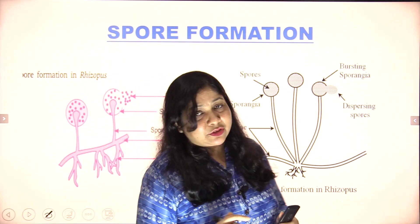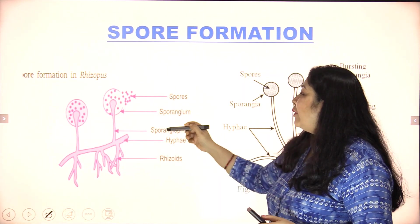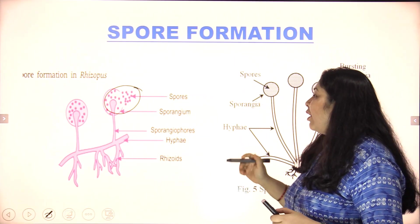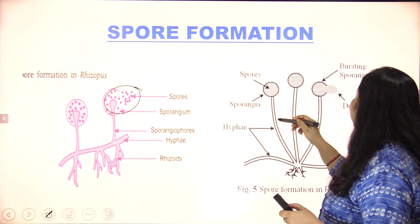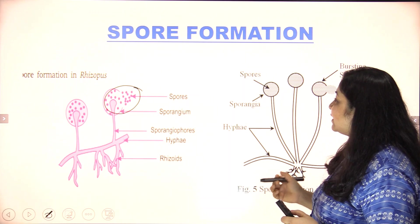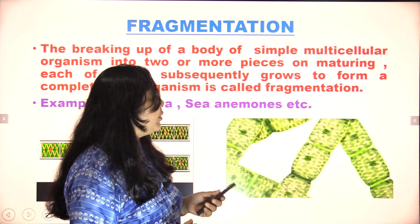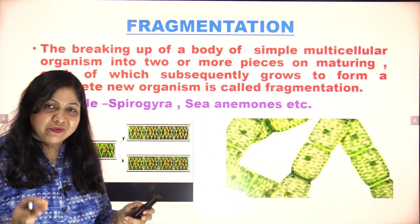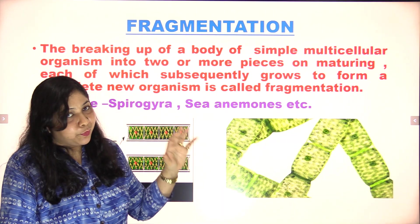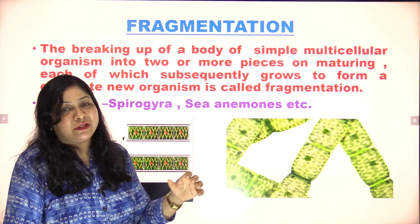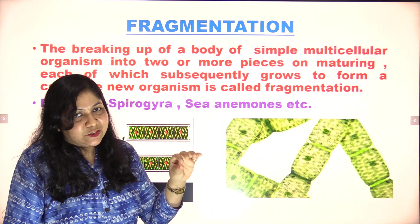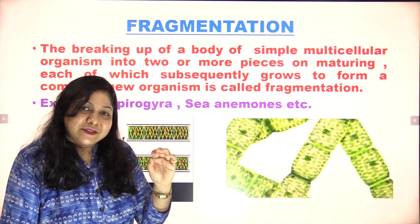You can see in the diagram: under favorable conditions, spores mature, and by the action of wind, air, and water they are dispersed to form new individuals. You have to remember the definitions, as there are exam questions. You can be asked what spore formation is. Most questions in this chapter come from sexual reproduction.